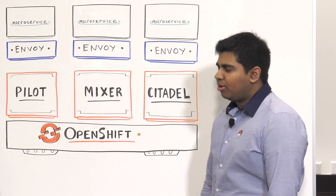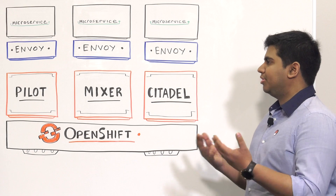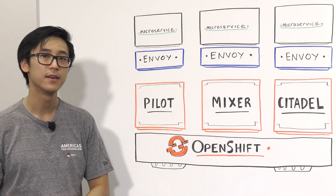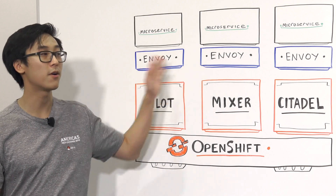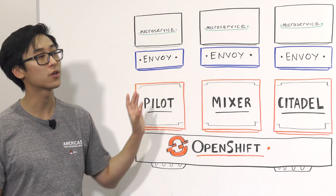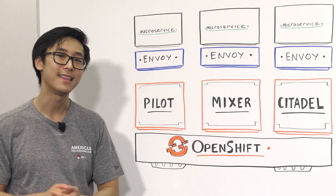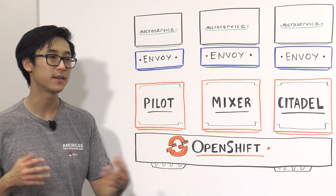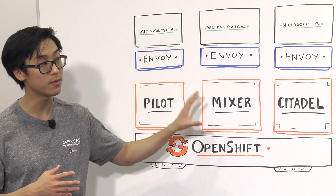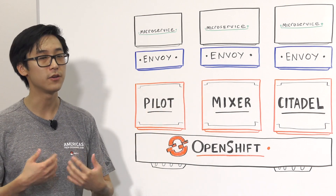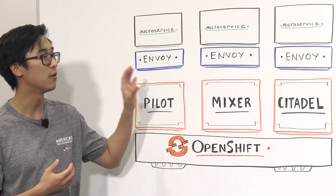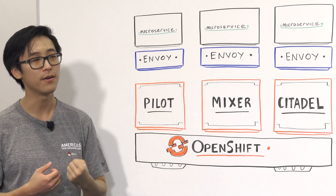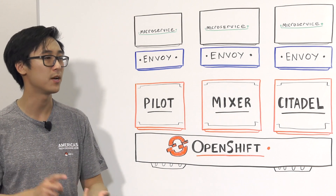So what if I wanted to monitor or get telemetry data? Mixer is the component for that. When the Envoy proxies are talking to each other, they first call Mixer for policy checking, and then after the request is complete, they call Mixer again to report back telemetry data. With Mixer, you can ensure very granular control over which microservices talk to which other microservices, as well as gathering telemetry data such as logging, metrics, and monitoring.